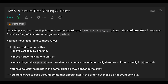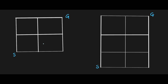Everyone, today we are going to solve the LeetCode question: Minimum Time Visiting All Points. Let's think about a simple case — the start point is here and the goal point is here. How many seconds do we need? Two seconds, right?